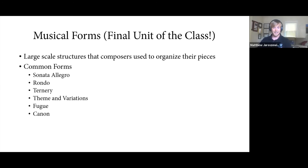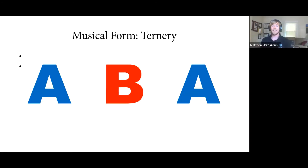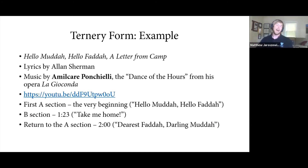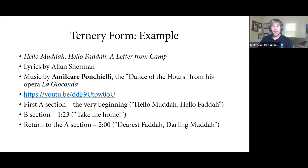The simplest form is ternary form — simply A-B-A. You have one A theme, a completely contrasting B theme, and then the return of A. It's called ternary because it has three parts. The outer parts (one and three) are the same; the middle part, B, is different.